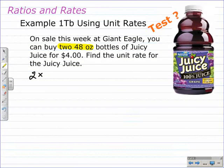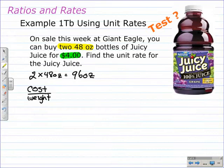The first thing we have to do is multiply 48 by 2, or 48 ounces by 2. When you do that multiplication, that gives 96 ounces. So that's our amount. The cost for these 96 ounces of juice is $4.00. We set up our ratio, cost over the weight.